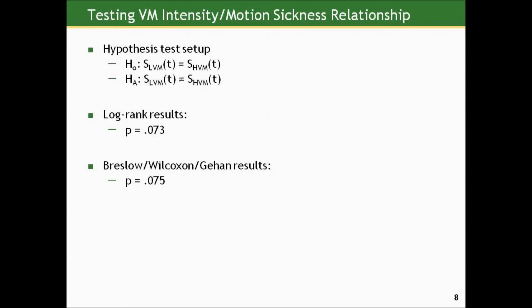Statistically speaking, there's no difference. If you use 0.05 as your rejection level, this is not a statistically significant difference. Even though the study showed some evidence that higher vertical motion was more linked to earlier vomiting or motion sickness, after accounting for sampling variability we can't rule out the possibility that there's no association between the intensity of vertical motion and motion sickness.